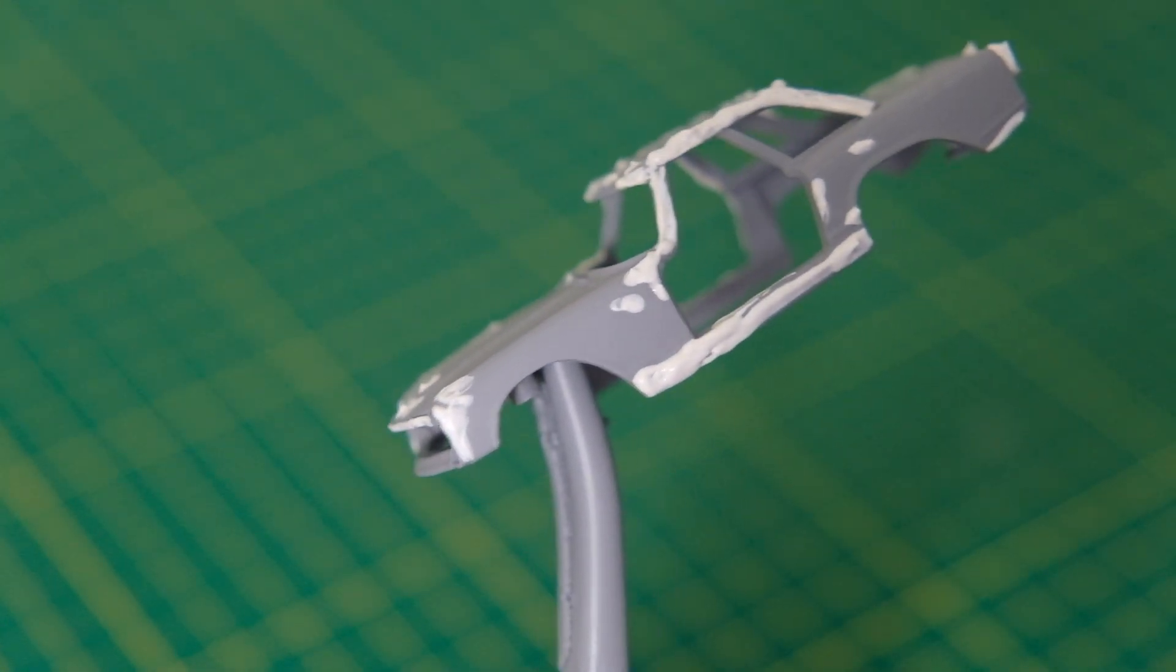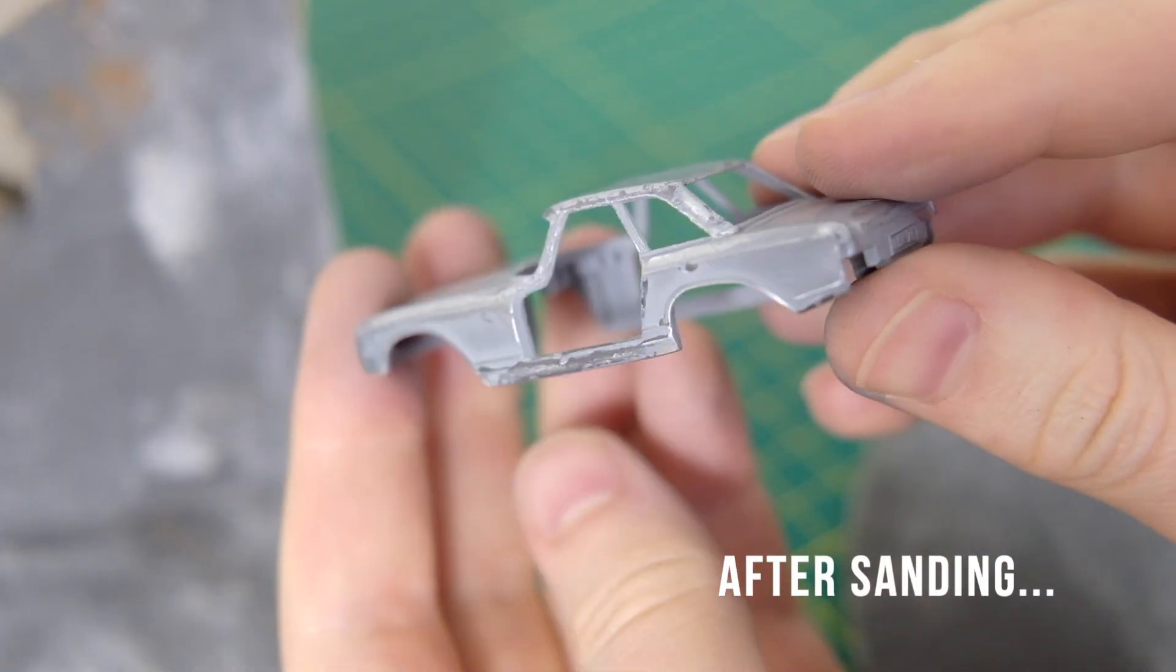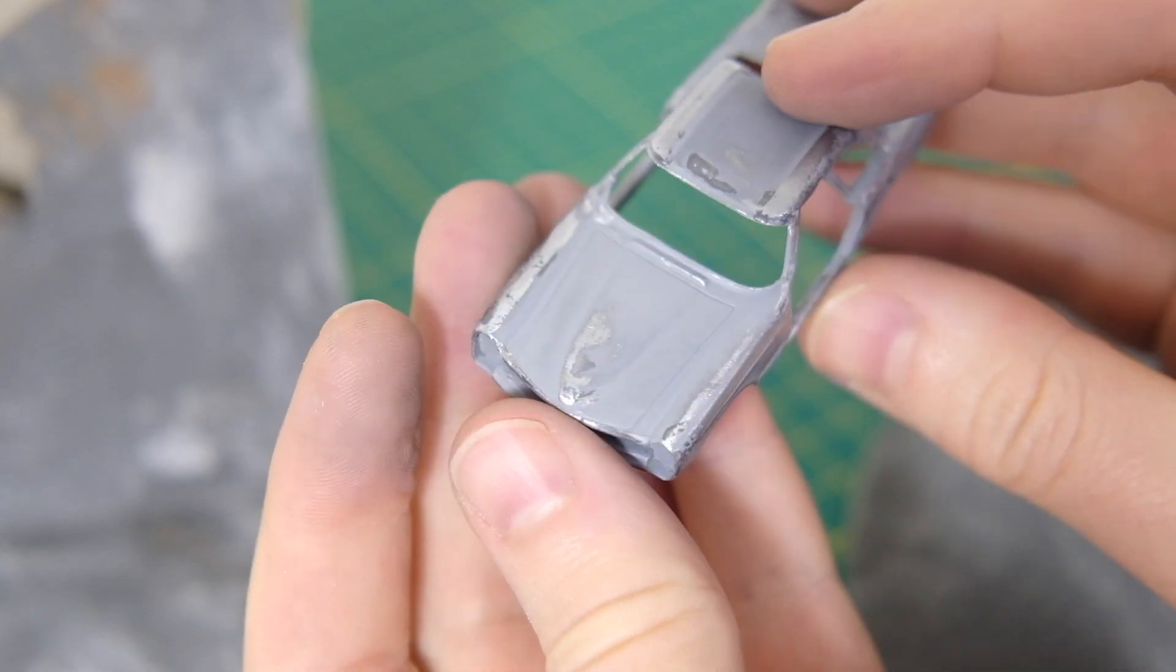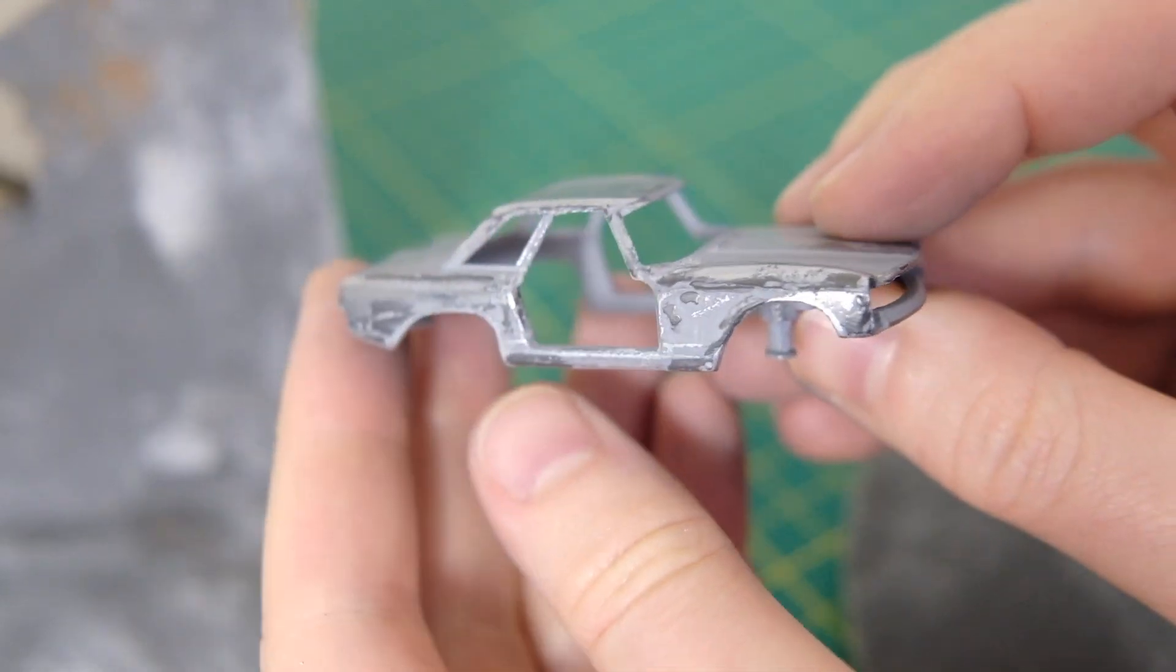So to spare you the boredom here's the casting post-sanding round two. Some areas are down to the bare metal again, like the wings but crucially the original Humbrol filler remains.